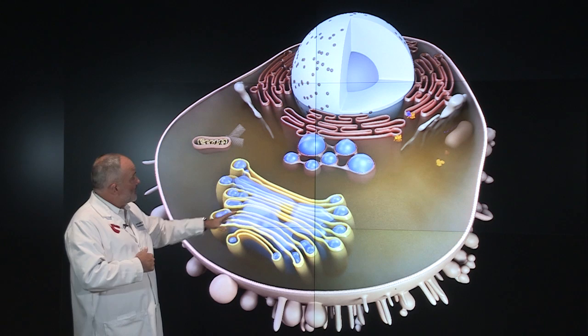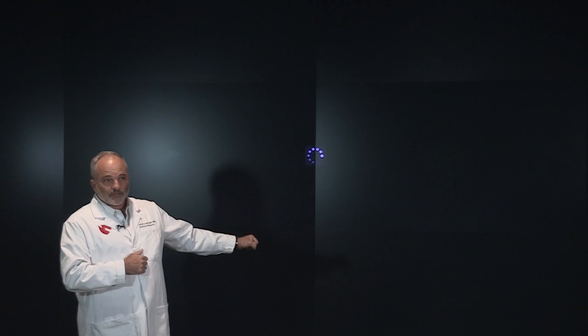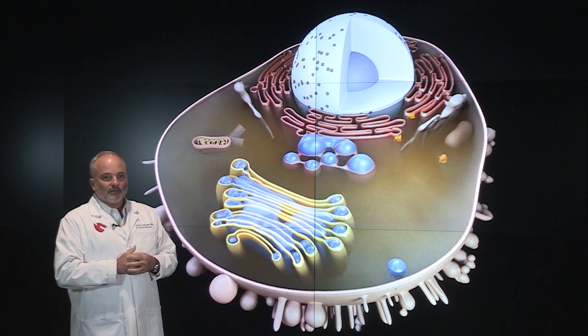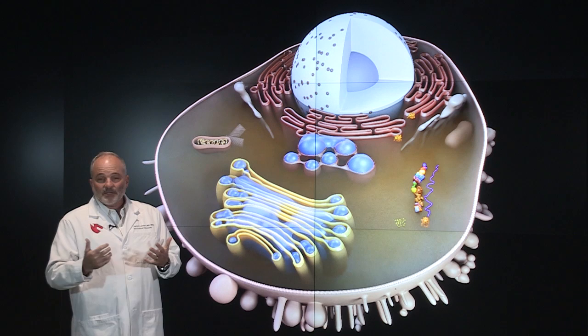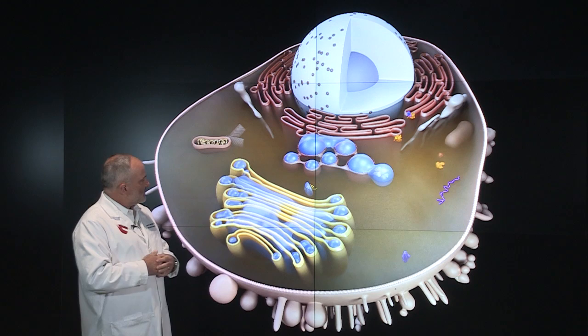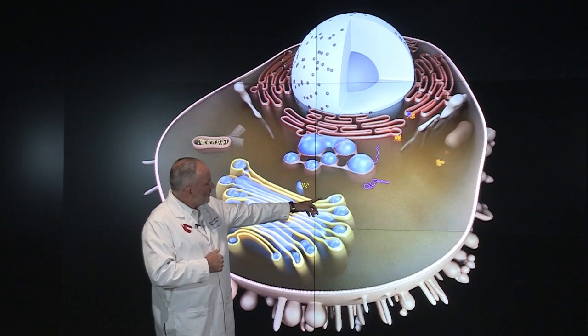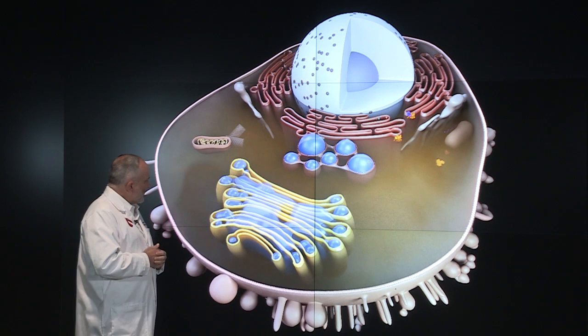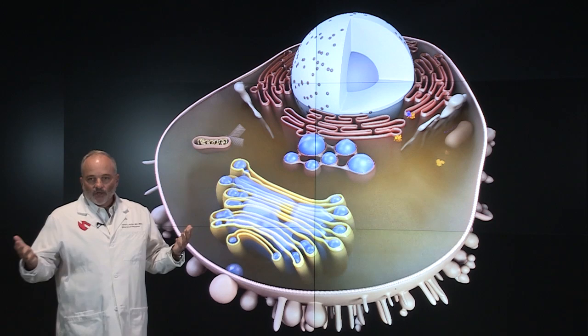What we know about the Delta variant is it does a much better job of binding to the cell surface receptor and gaining entry. It also does a better job of turning your cells into a virus factory, producing many more daughter virus particles than previous versions of the coronavirus. People with Delta variant can shed up to a thousand times or more the amount of virus from their nose and respiratory epithelium. The virus RNA gets turned into proteins which hijack the cell; new virus particles get packaged, come through the Golgi apparatus, get enveloped, and are extruded outside the cell to infect others.